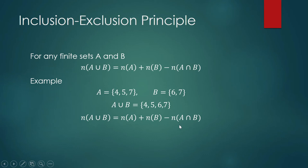The reason we must exclude the elements in the set intersection is that if we did not, we would be double-counting some elements. If we count three elements in A and then two in B, we double-counted the element 7. That is the idea behind the inclusion-exclusion principle: to get the number of elements in the set union, we add the number of elements in A plus the number of elements in B, then subtract the number of elements in A intersection B.